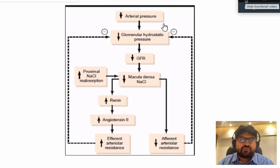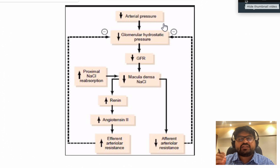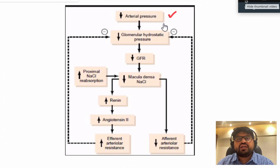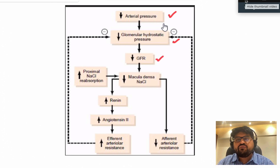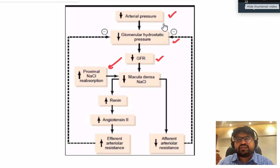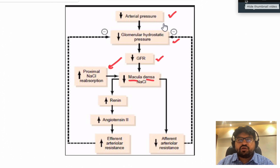The body has a very fine intrinsic system to protect its own kidney. The kidney is responsible for maintaining glomerular pressure and circulating volume. Whenever arterial pressure falls — say after an accident — less blood goes to the glomerular system, reducing GFR. When GFR falls, sodium is reabsorbed proximally, so less sodium reaches the macula densa.